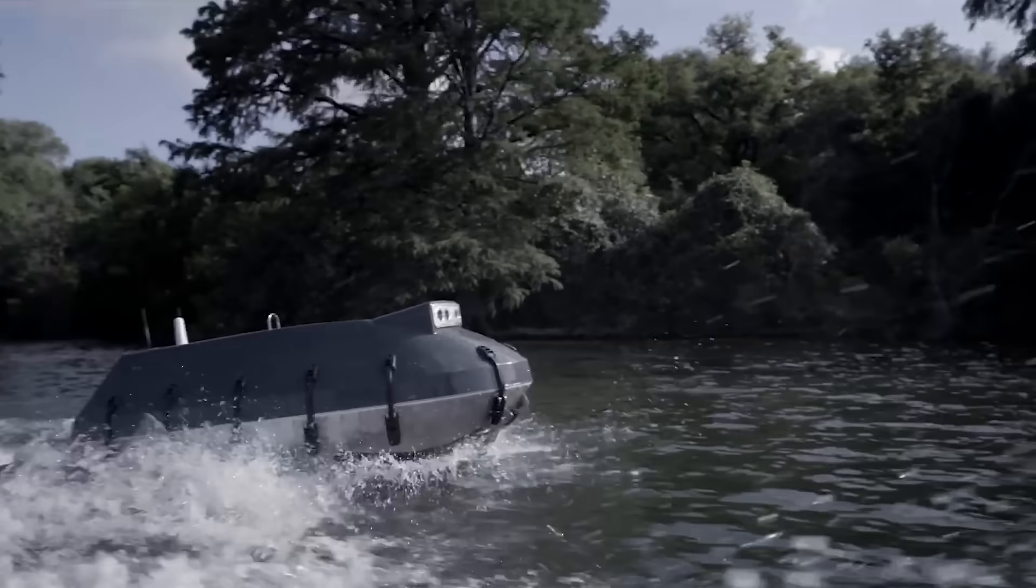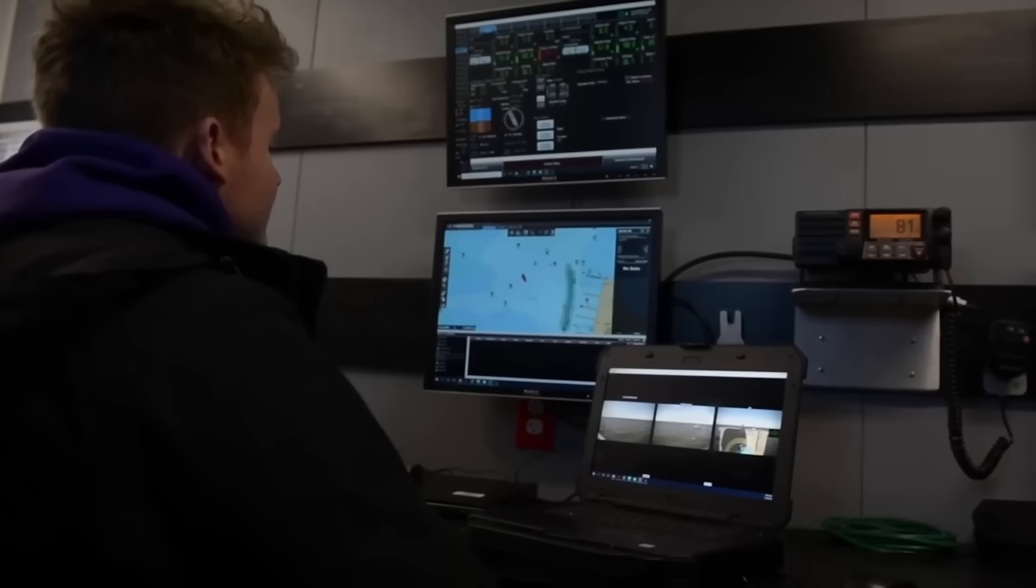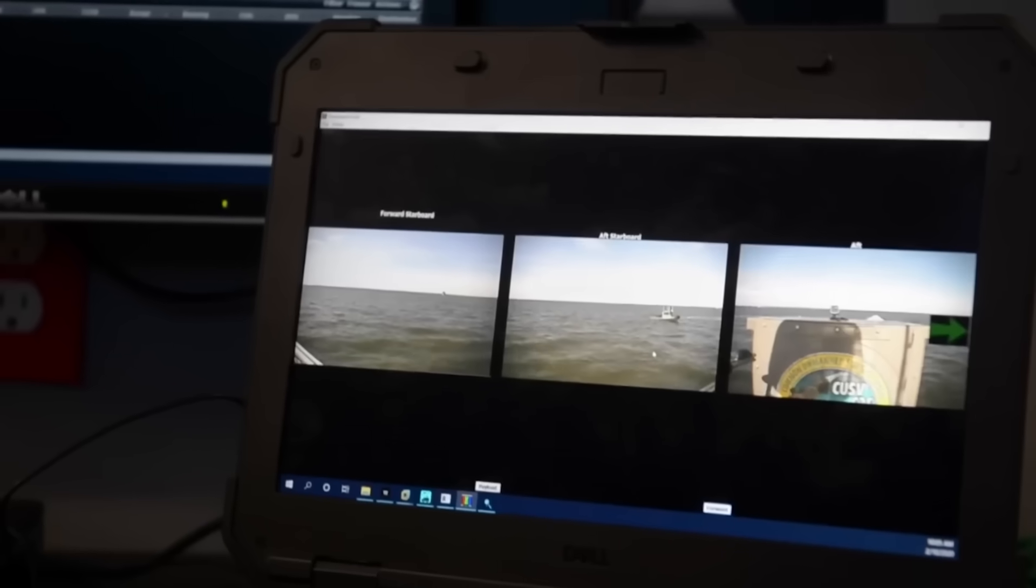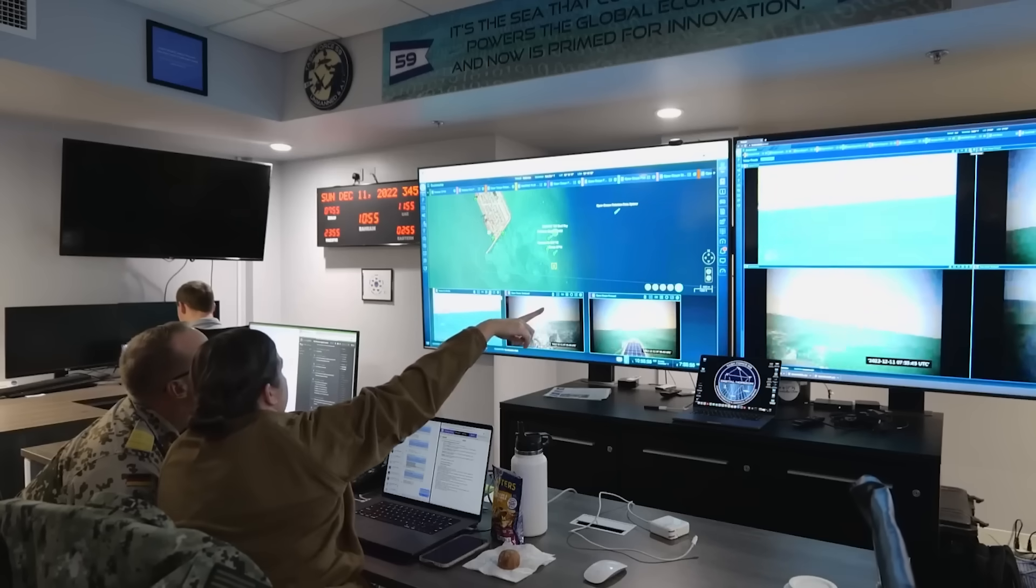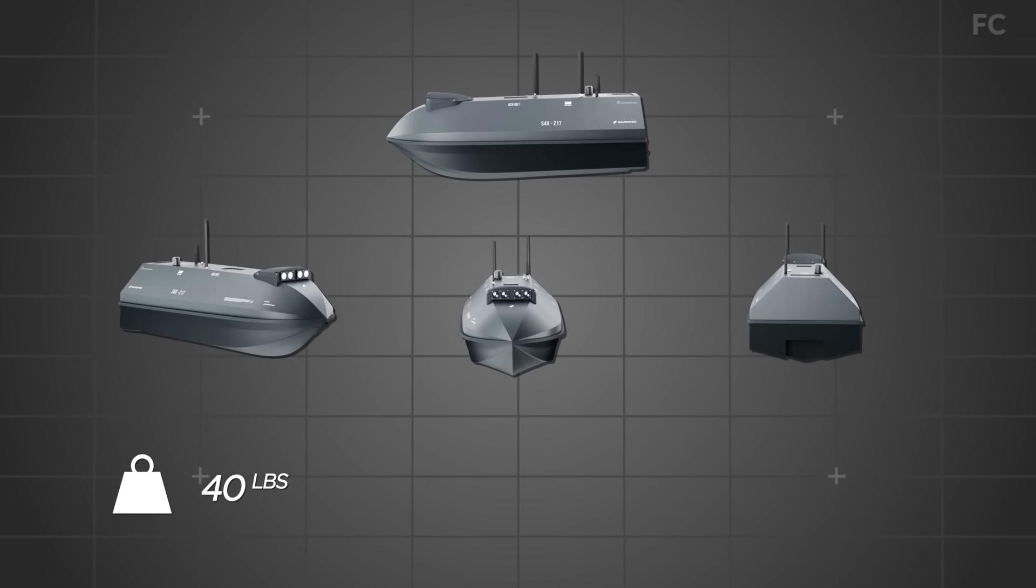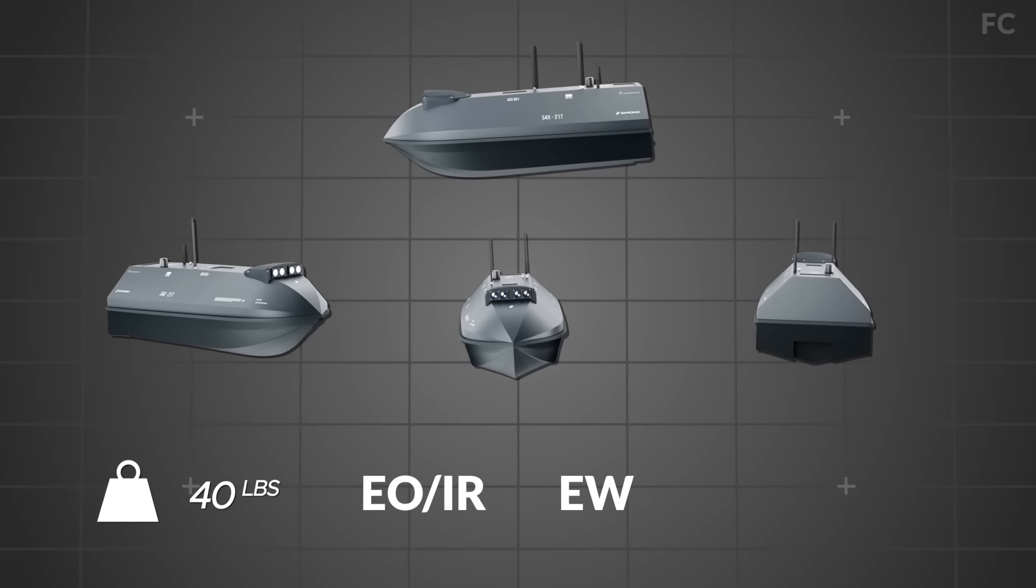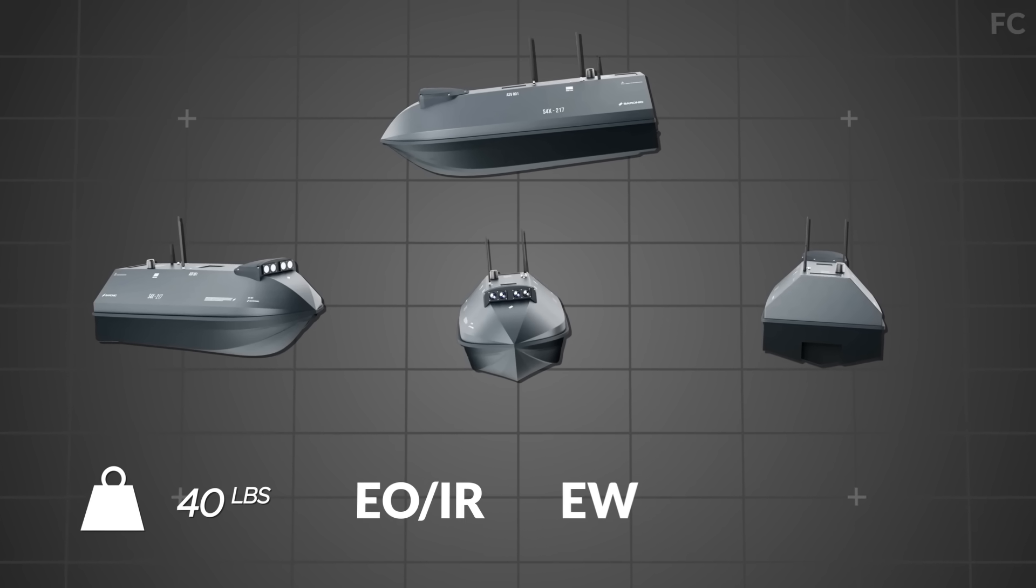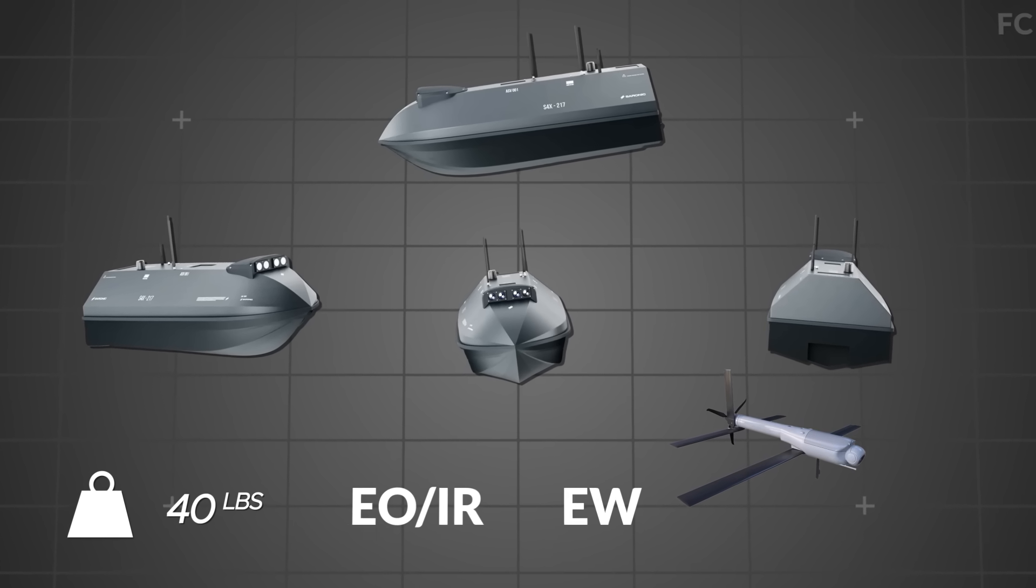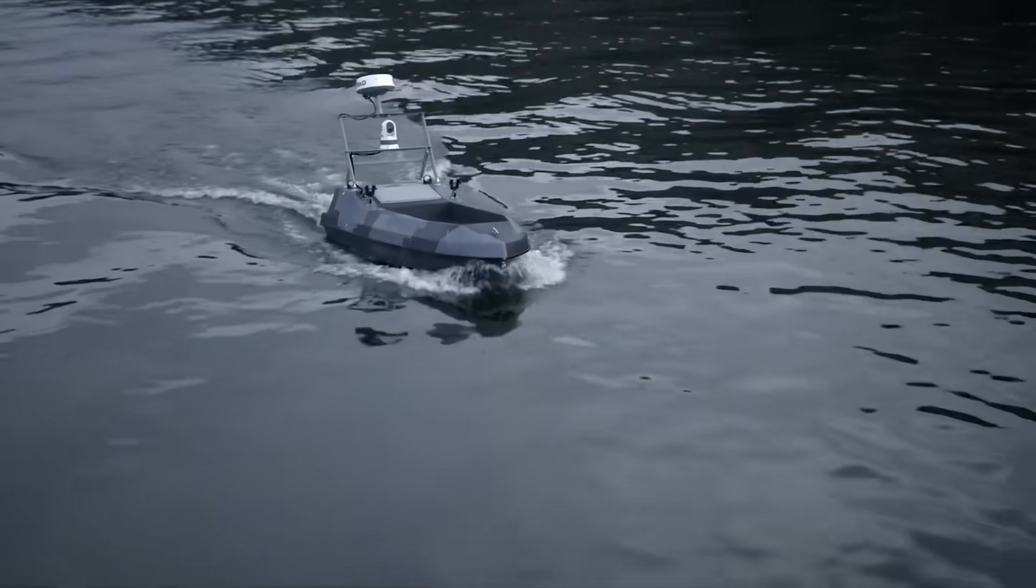Speed meets survival. 20 knots in a tiny hull is lively. Accelerate, reposition, vanish behind harbor traffic. Inside a 30 nautical mile bubble, it completes the whole loop: ingress, snoop, sting, exfil, without theater. Punch above weight. 40 pounds buys options: EO/IR for target ID, compact EW to poke comms, a demolition charge for piers or prop fouling, even a loitering round when back off needs punctuation. It's a micro dagger. Quick in, clean out.